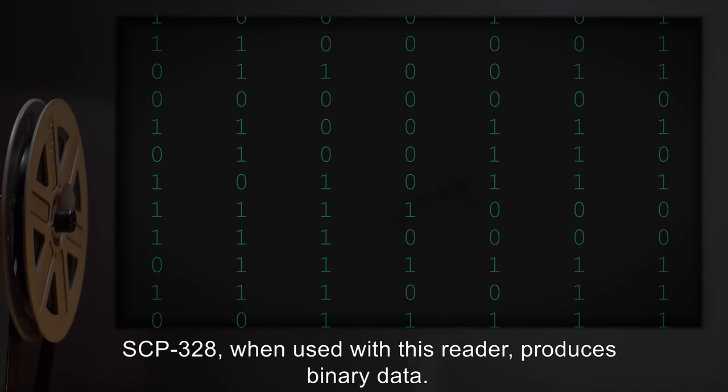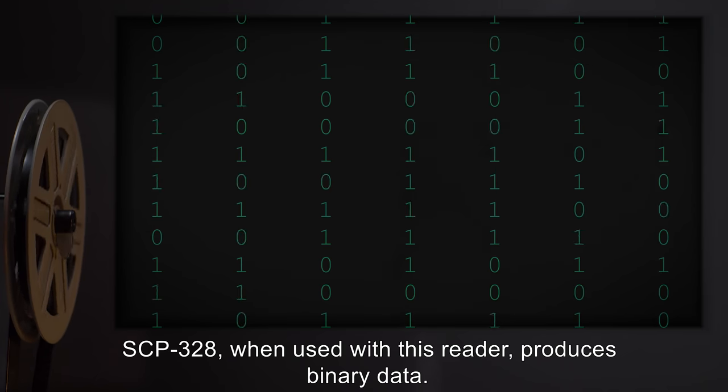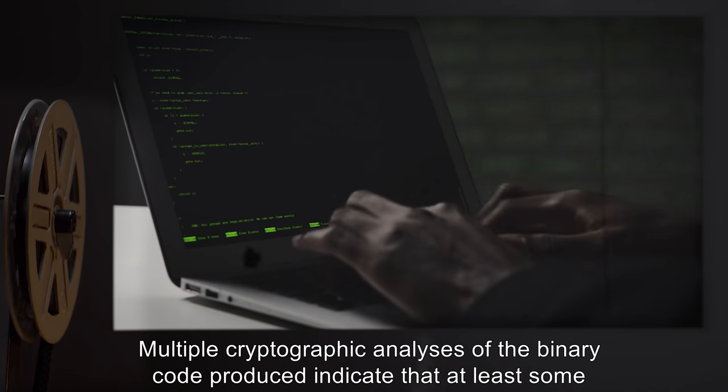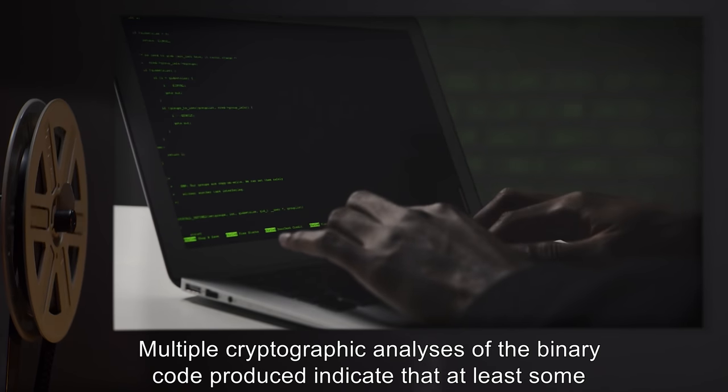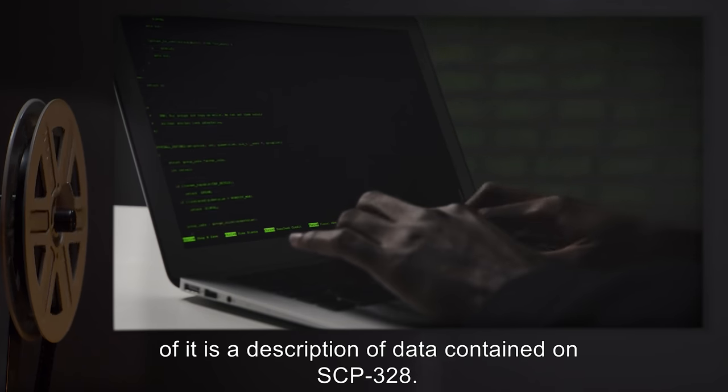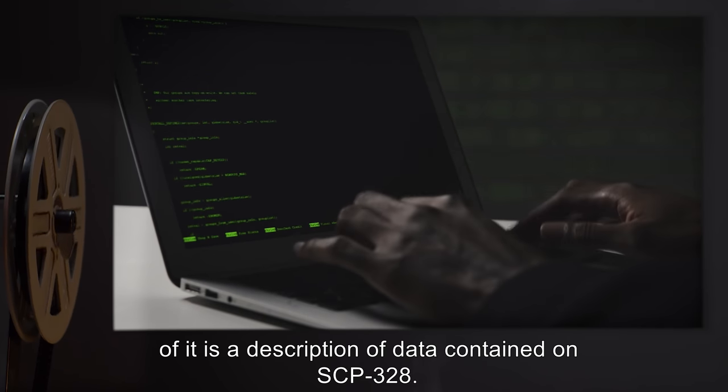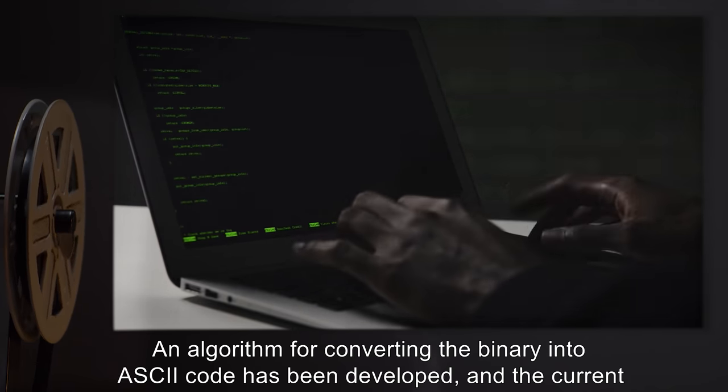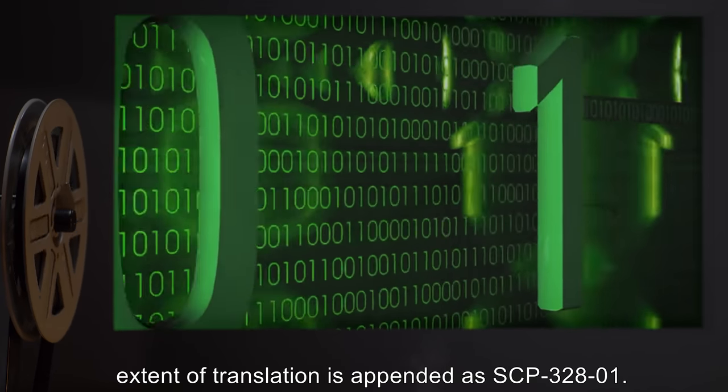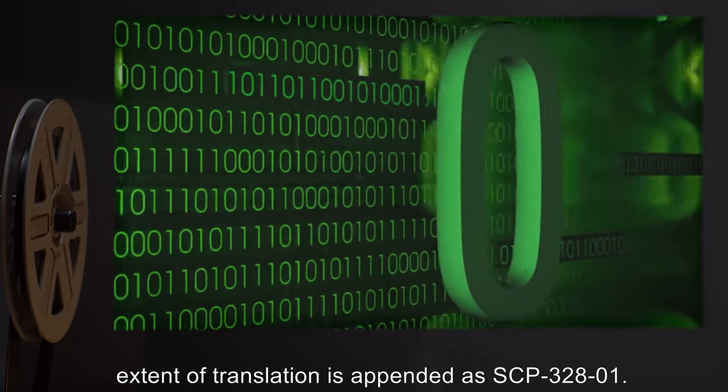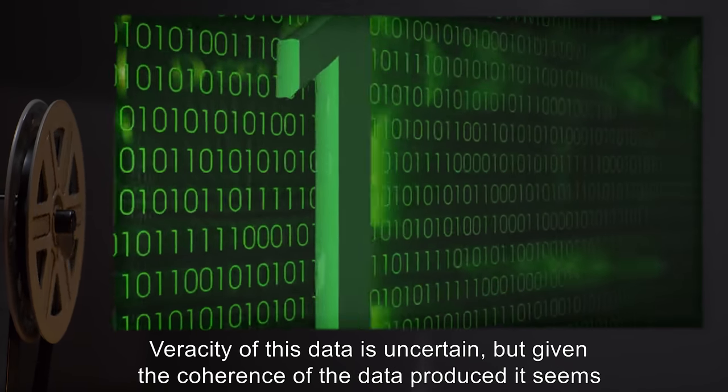SCP-328, when used with this reader, produces binary data. Multiple cryptographic analyses of the binary code produced indicate that at least some of it is a description of data contained on SCP-328. An algorithm for converting the binary into ASCII code has been developed, and the current extent of translation is appended as SCP-3281.